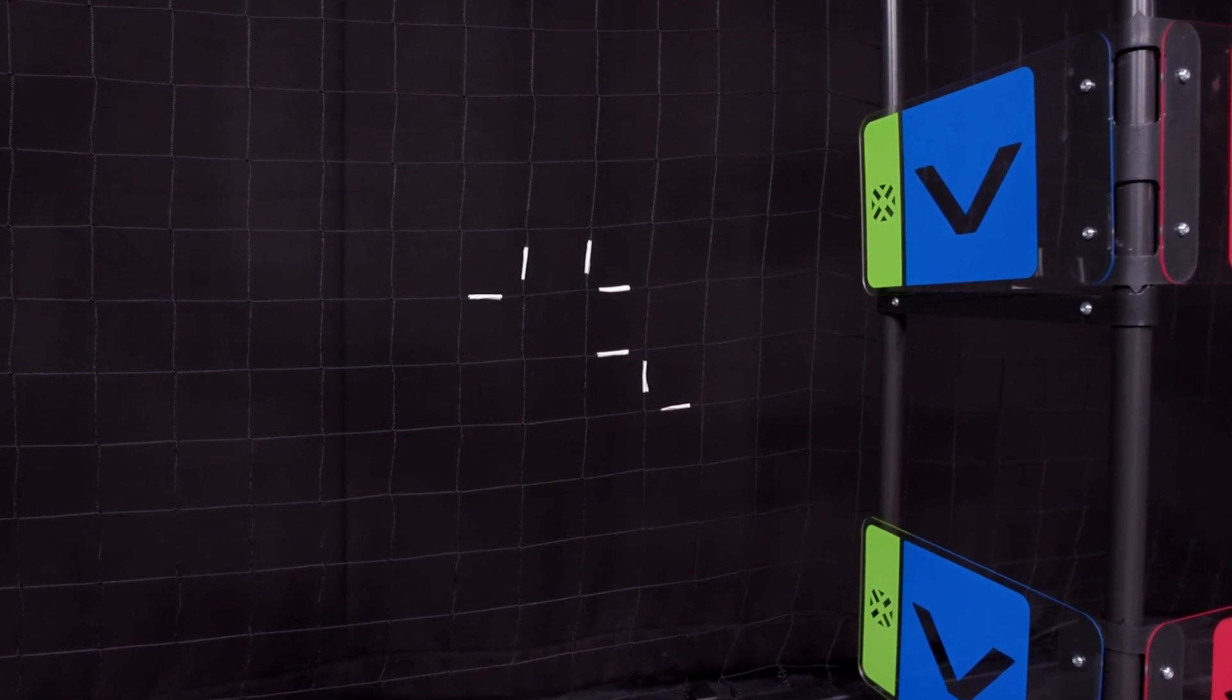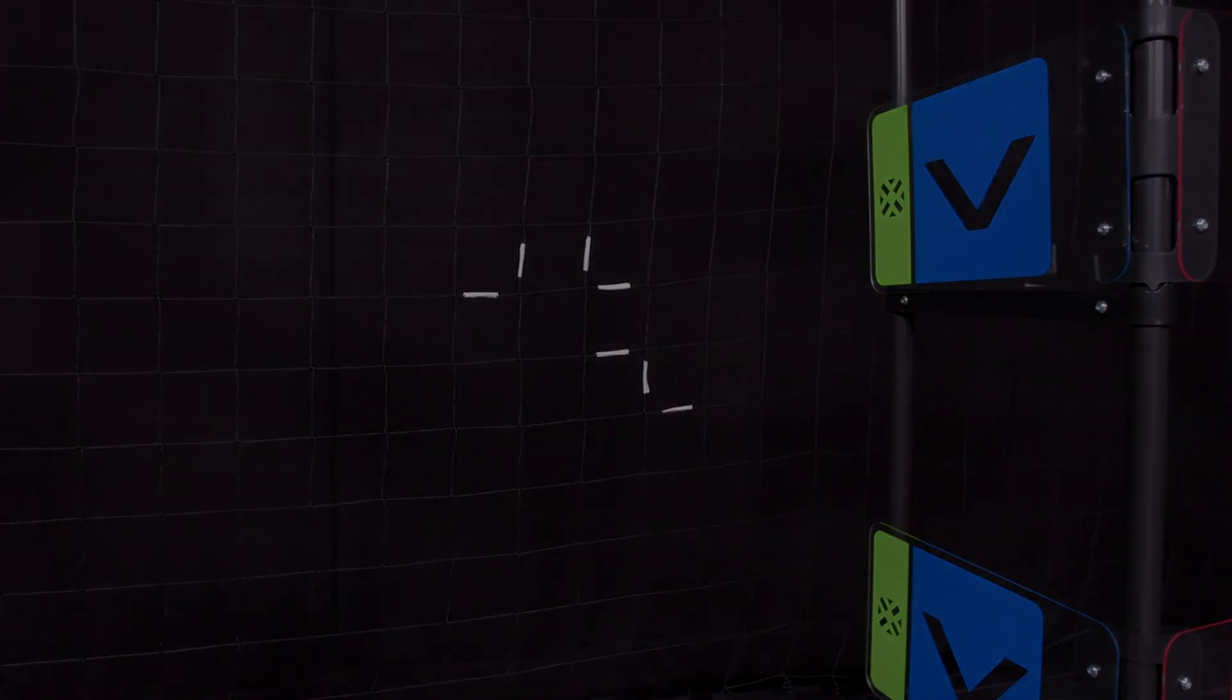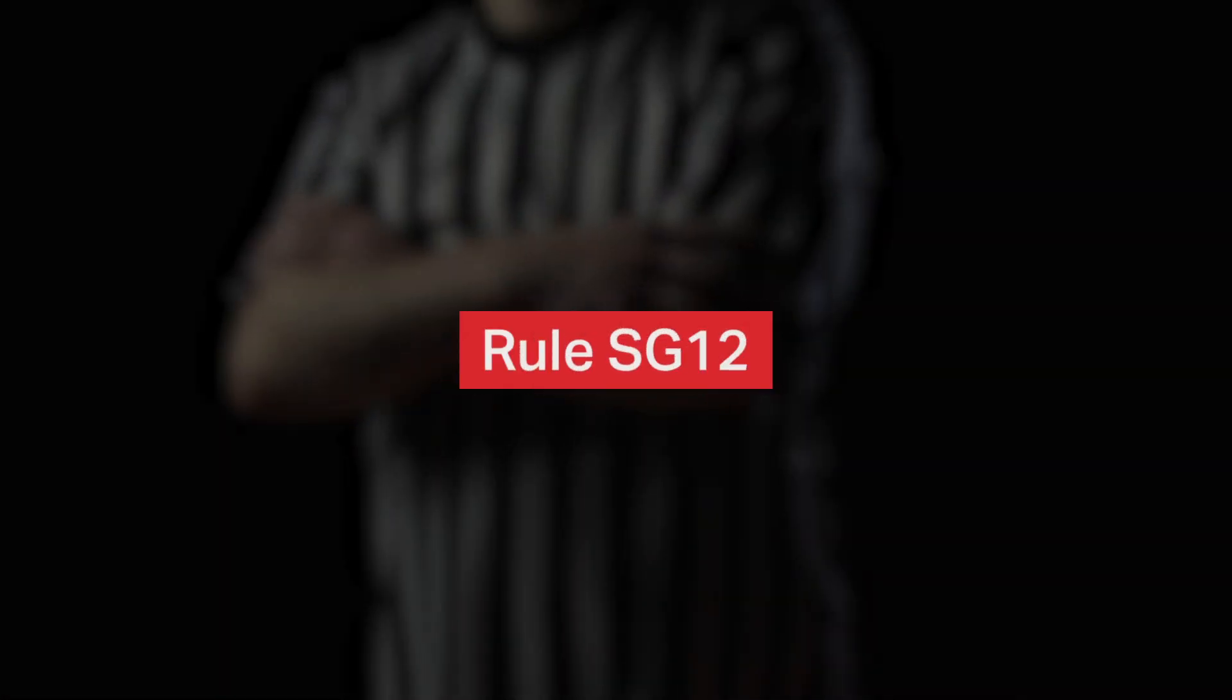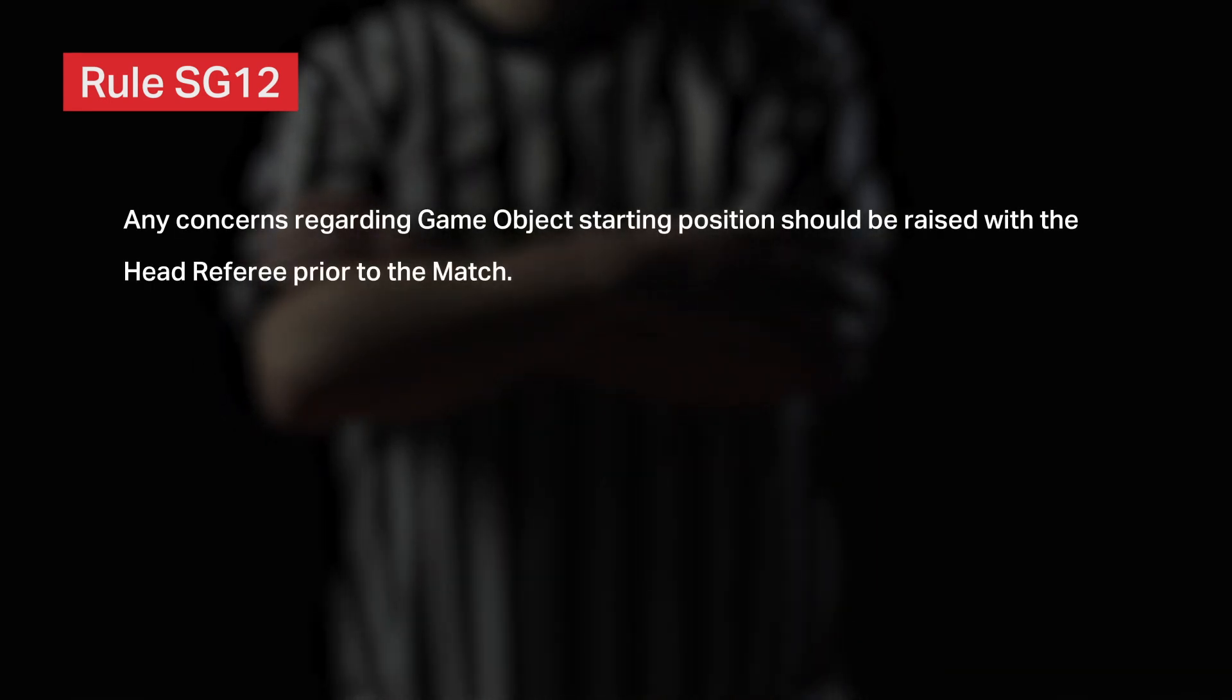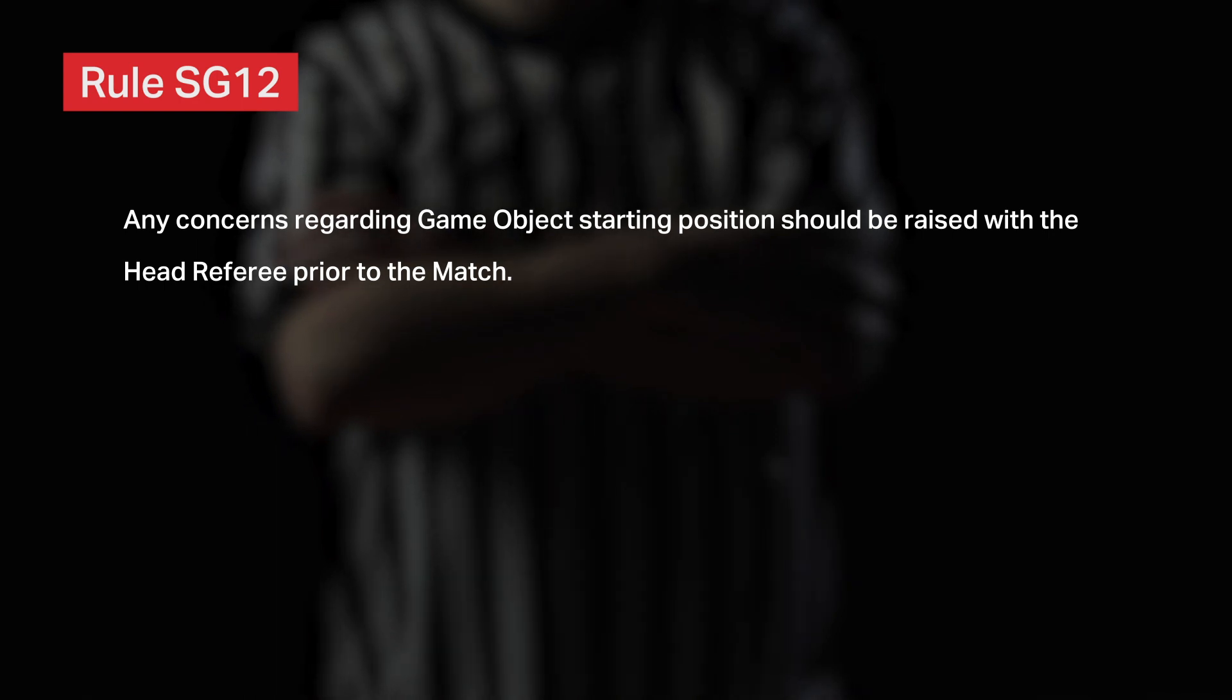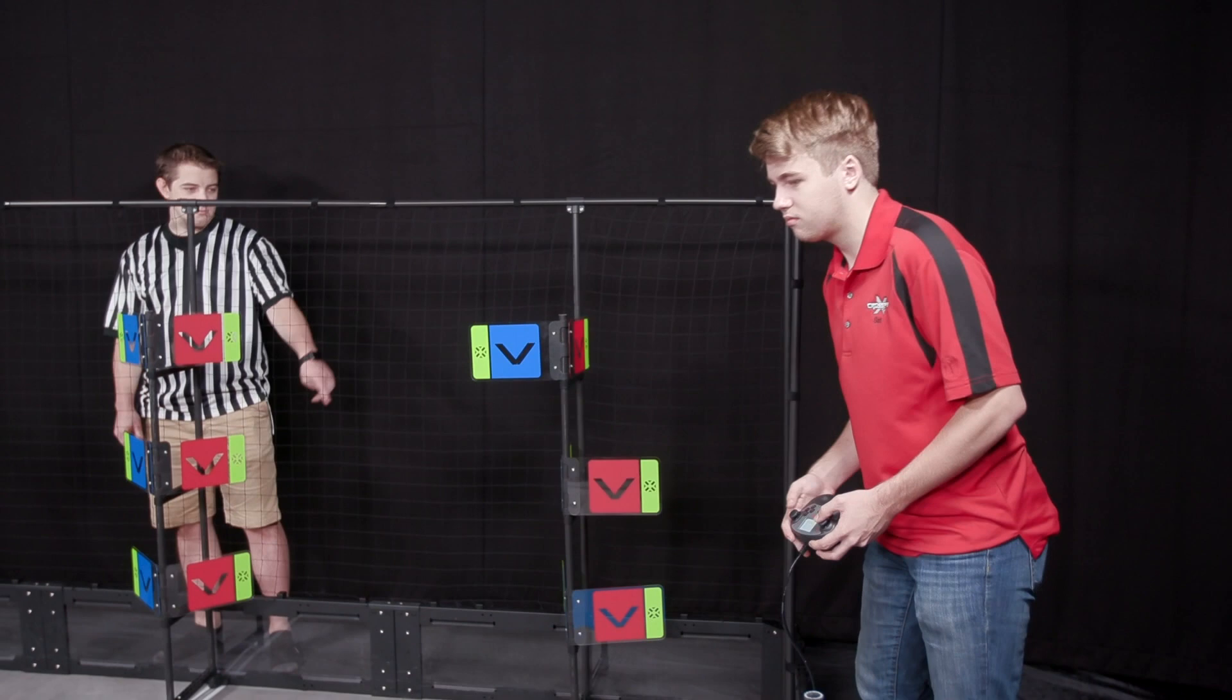Teams should design their robots and strategies with this possible variance in mind. This is also a good time to remind teams and referees about rule SG-12, which states that any concerns regarding game object's starting position should be raised with the head referee prior to the match. Team members should never adjust game objects or field elements themselves.